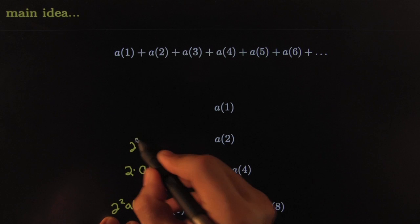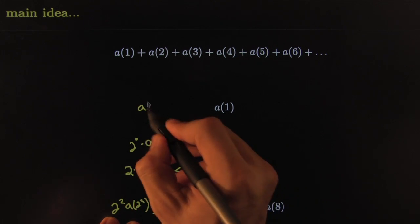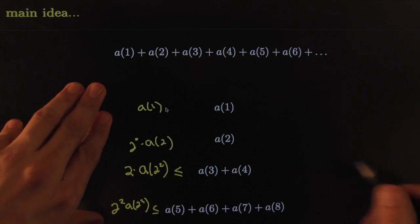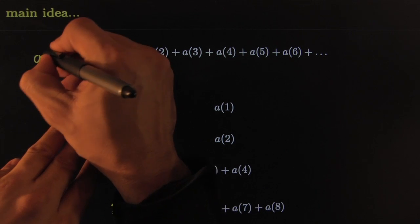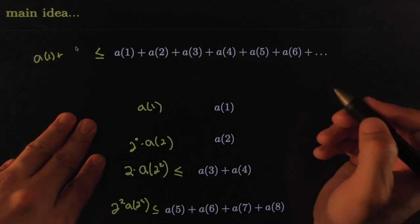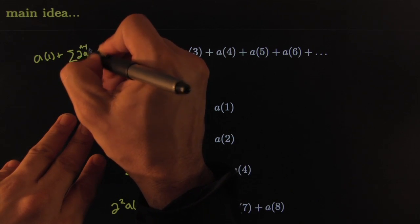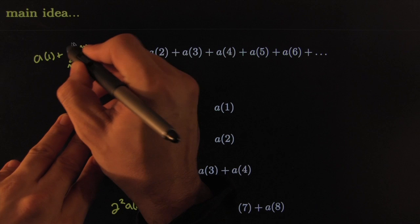We have 2 squared times a(2^3). We have 2 to the 0 times a(2). And this one is just all by itself here. It doesn't quite match the pattern for the generic case.